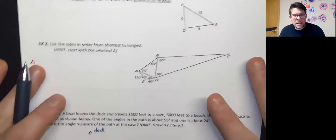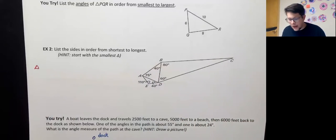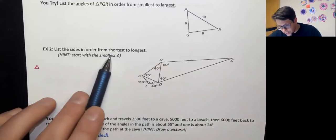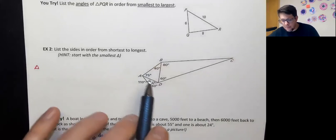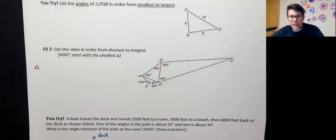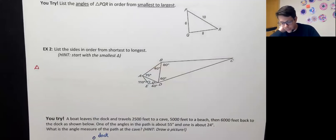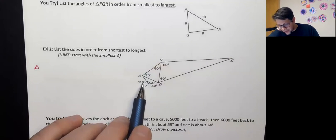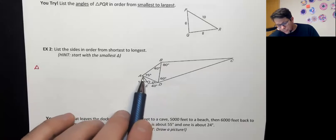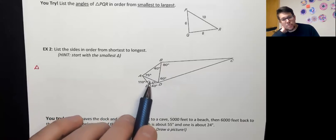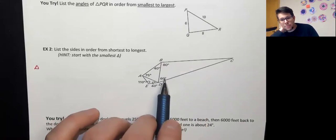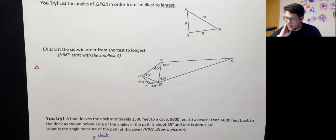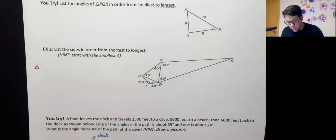In example number two, notice that there are multiple triangles. The directions are the same: list the sides in order from the shortest to the longest. Rather than just three sides or angles, we have many. One of our largest angles is the 110-degree angle, but it is part of a very small triangle, so those side lengths will be very short. Our biggest triangle has relatively small angle measures. You want to start with the smallest triangles and work up to the largest, then work within each triangle.